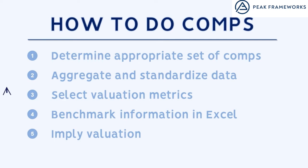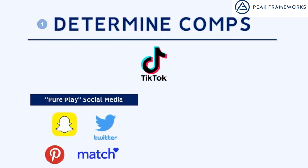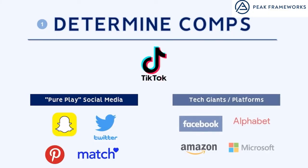In order to do comps, I would break it out into the following steps. For this exercise, let's try to determine the value of TikTok using comps. The first thing we want to do is find relevant peers. TikTok is really a pure play social media player — a company that has a relatively unified business model in one category. I'll also include some of the larger consumer tech platforms like Facebook and Google because they also have social media components. We want to make sure that they're all adjacent to social media, growing quickly, and have an international presence.